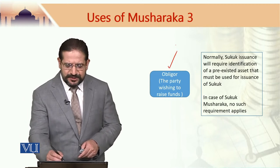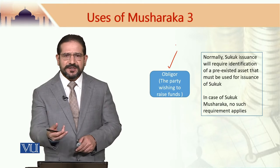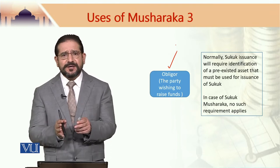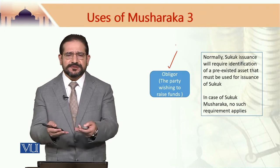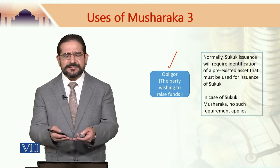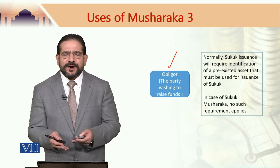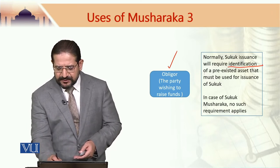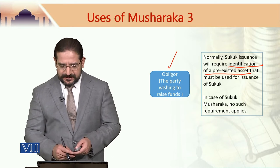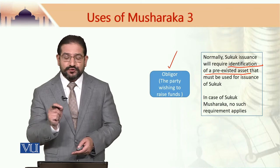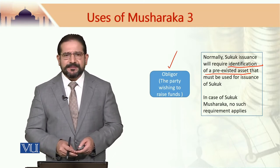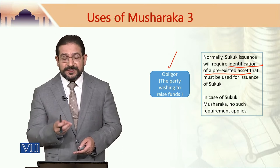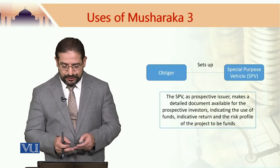The Obligor is a party which is actually looking for additional funds. It could be a corporate, it could be a government or it could be any other business. This party wishes to raise additional funds for business purposes, for the expansion of the business or for working capital financing. Normally, Sukuk issuance will require identification of a pre-existent asset. The beauty of Sukuk Musharraka is that it does not require the pre-existence of an asset before the Sukuk certificates are issued.